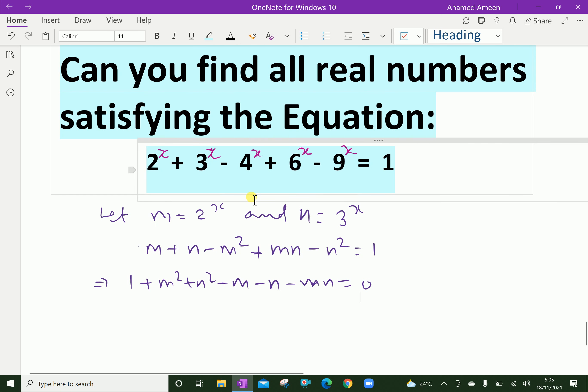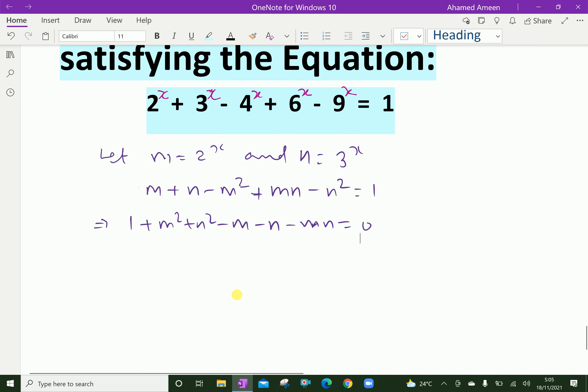Now here, multiplying both sides by 2, we have 2 + 2m squared + 2n squared minus 2m minus 2n minus 2mn equals 0.